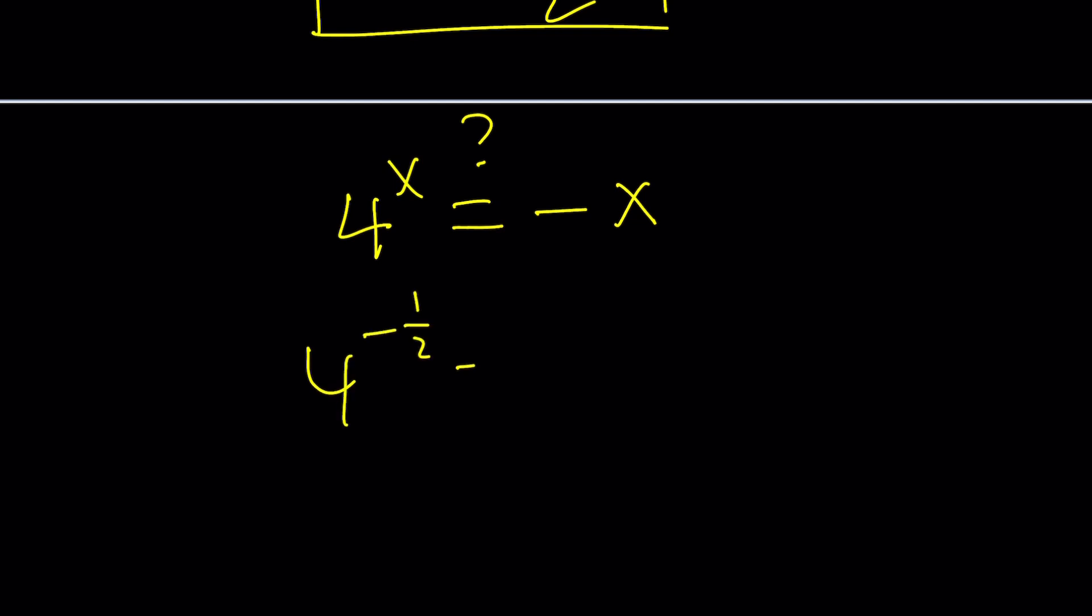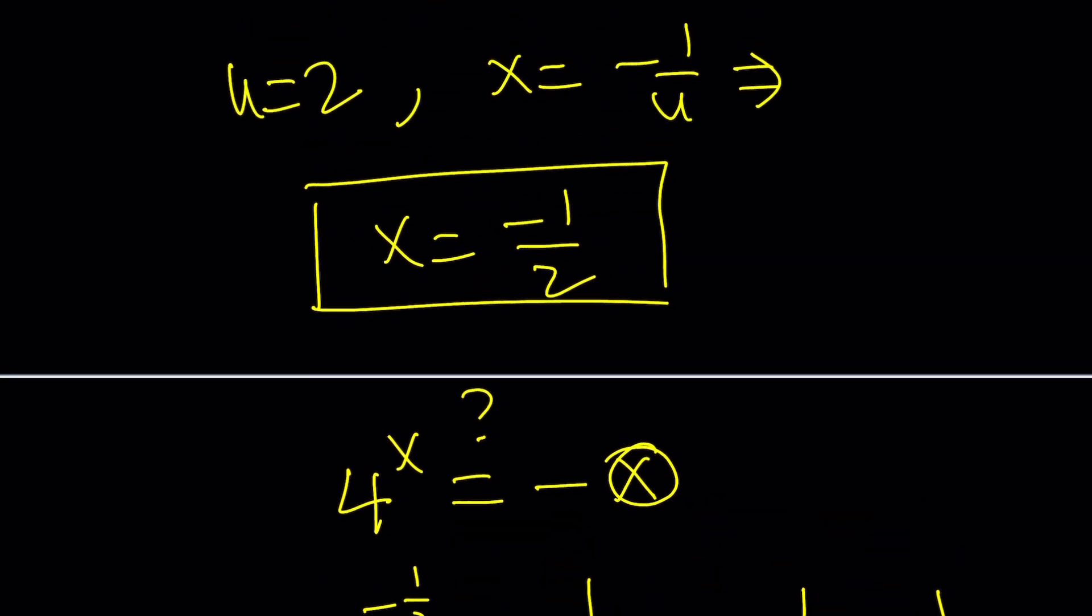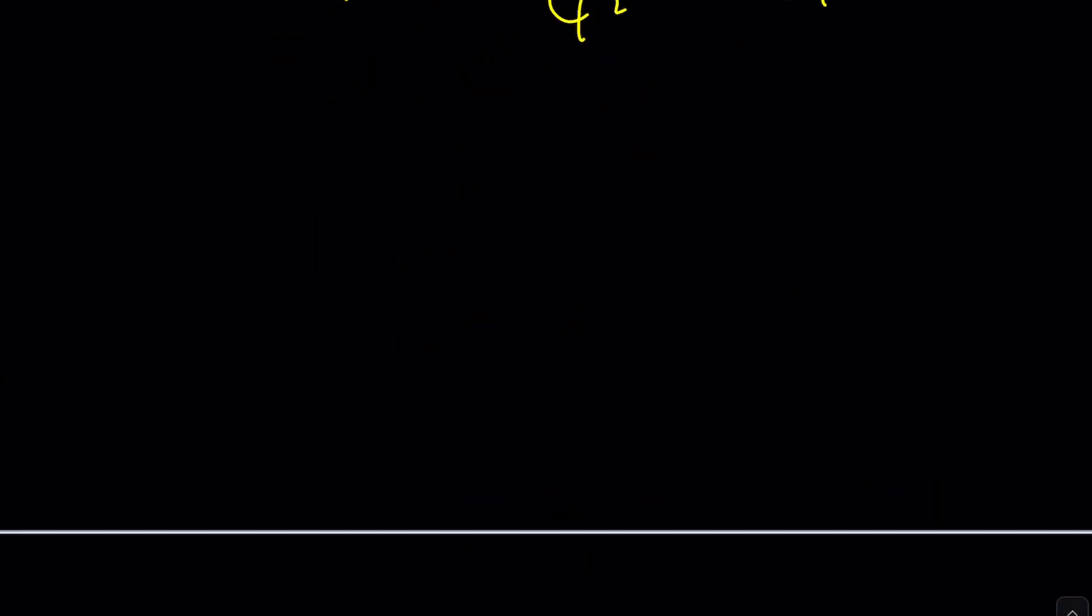If you replace x with negative 1 half, 4 to the power of negative 1 half is going to be 1 over 4 to the power of 1 half. 4 to the power of 1 half is the square root of 4. Square root of 4 is 2, so this is going to be 1 half. And if you replace x with negative 1 half on the right-hand side, you're also going to get 1 half. So, the solution checks out, and that is the only real solution.